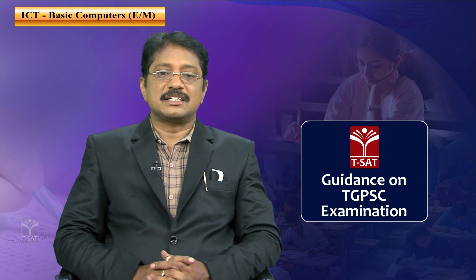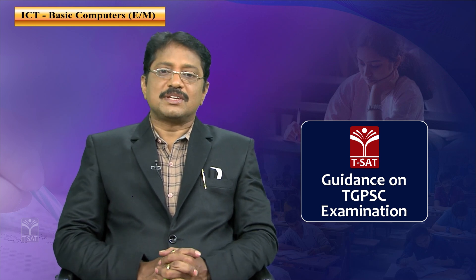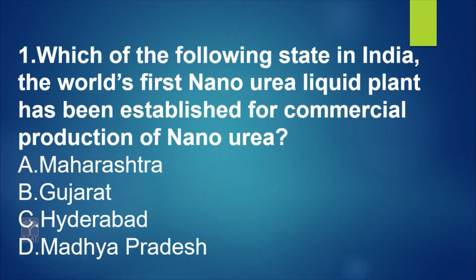A question that was given in the examination: 'Which of the following states in India has the world's first nano urea liquid plant established for commercial production of nano urea?' The options given were Maharashtra, Gujarat, Hyderabad, and Majapadasis. The answer is Gujarat — the first nano urea liquid plant has been established in Gujarat.